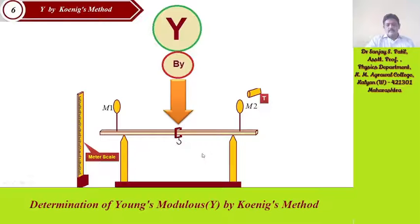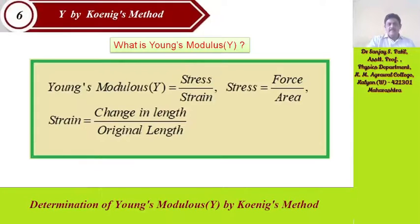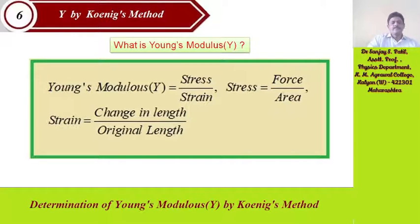The question is: what is Young's modulus and why do we have to find it? Young's modulus is a ratio of stress and strain, where stress is the ratio of force and area, while strain is the ratio of change in dimensions per unit original dimensions — specifically, change in length per unit original length.